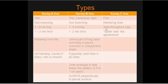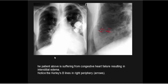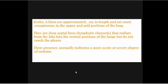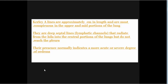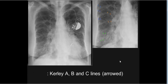Kerley C lines are fine interlacing lines throughout the lung with a spider-web-like appearance. Kerley B lines are frequently seen more than E and C lines. Lines arranged in a steeple ladder-like pattern, 0.5 to 1 centimeter long, always perpendicular to the pleural surface. In congestive heart failure, Kerley B lines appear at the periphery, horizontal and perpendicular to, and reaching, the pleural surface. Kerley A lines are approximately 4 centimeters in length, most conspicuous in the upper and mid portions of the lung.